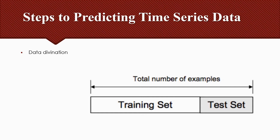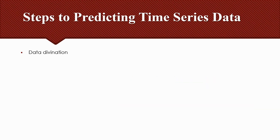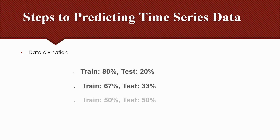The objective is to estimate the performance of the machine learning model on new data not used to train the model. This procedure has one main configuration parameter, which is the size of the train and test datasets, most commonly expressed as a percentage between 0 and 100. There is no optimal split percentage; you should choose a split percentage that meets your project objectives. Common split percentages include 80% train / 20% test, 67% train / 33% test, and 50% train / 50% test.